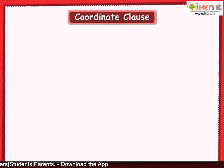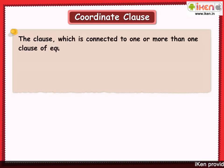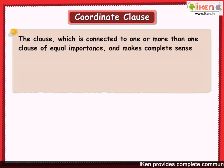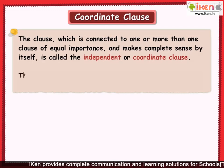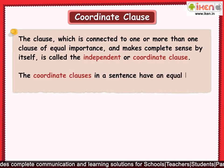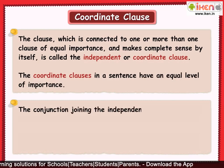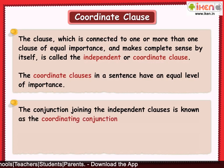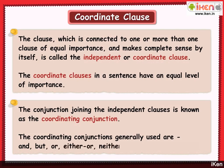Let us now learn about another type of clause called the coordinate clause. The clause which is connected to one or more clauses of equal importance and makes complete sense by itself is called the independent or coordinate clause. The coordinate clauses in a sentence have an equal level of importance. The conjunction joining the independent clauses is known as the coordinating conjunction. The coordinating conjunctions generally used are: and, but, or, either/or, neither/nor, so, for, yet, etc.